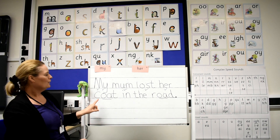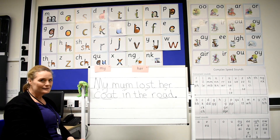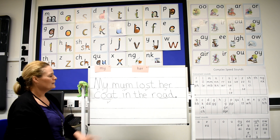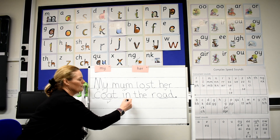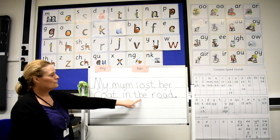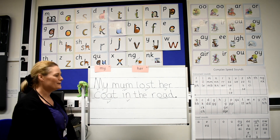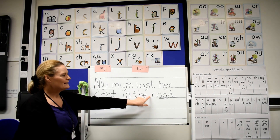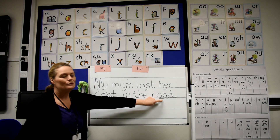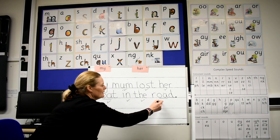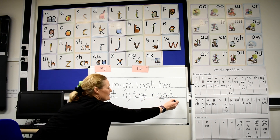My mum lost her coat — did you remember our special friends in coat? Fantastic, give yourself a tick. Finger space. In — well done if you wrote in: I-N. Red word: the — did you remember T-H-E? I'm sure you did, give yourself a tick. Finger space. Road — did you remember our special friend OA? Fantastic, give yourself a tick. And I'm sure you remember, unlike me, my full stop. Well done, give yourself another tick.